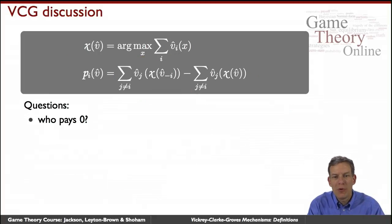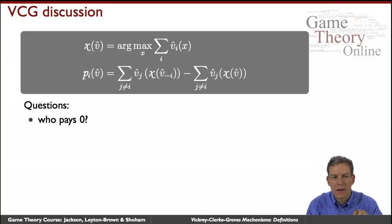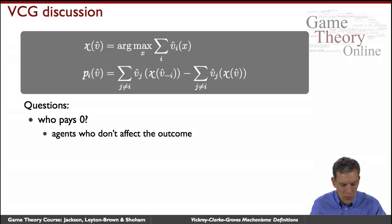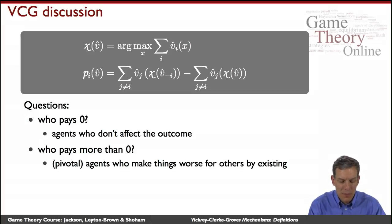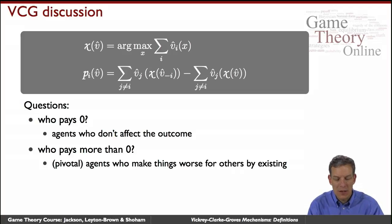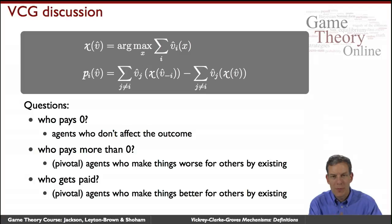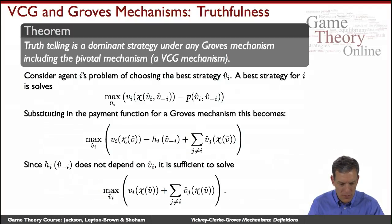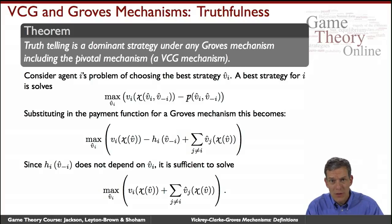Who pays zero in this world? People who end up not affecting the outcome at all — their presence or non-presence, their announced utility function, didn't affect things overall. Who pays more than zero? Pivotal agents who make things worse by existing — situations where their presence actually changed the outcome in a way that made other individuals worse off. Some individuals can also get paid in circumstances where they make things better for others. The beauty of these mechanisms is that truth-telling is going to be a dominant strategy under any Groves mechanism, including the pivotal mechanism and VCG mechanisms.